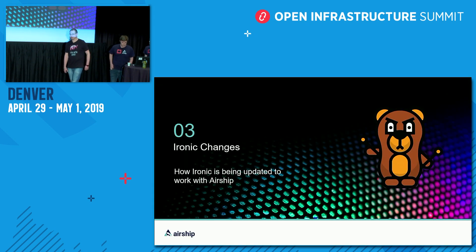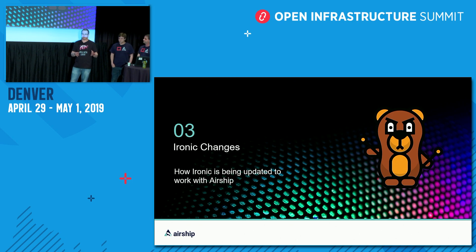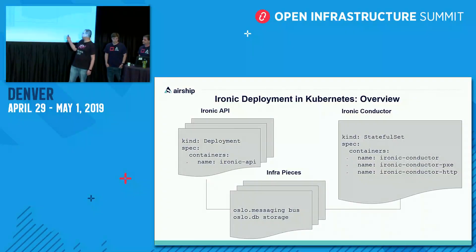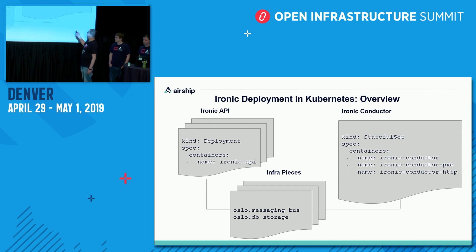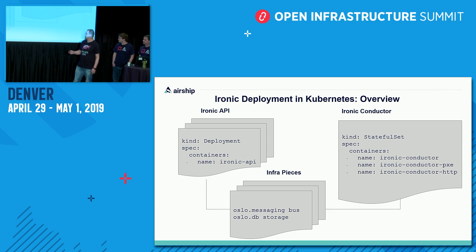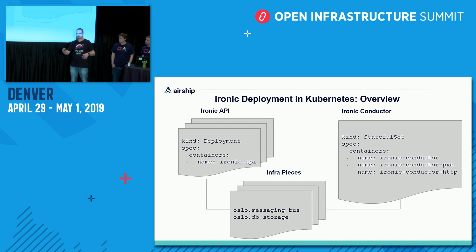Metal³ doesn't really care how Ironic is deployed — all it needs is a working Ironic API to talk to. We decided to deploy Ironic using what's already available in the community: deploying Ironic in Kubernetes with OpenStack Helm. You have Ironic APIs as a Deployment in Kubernetes, Ironic Conductors as a StatefulSet, and some supporting pieces inside. This was already working, but it was too tightly coupled to OpenStack. Ironic can work in standalone mode, but OpenStack Helm was lacking the ability to deploy it without dependencies on all the other OpenStack services.